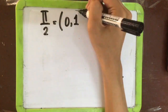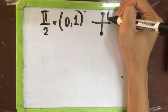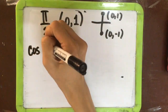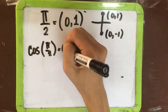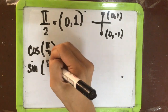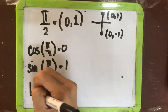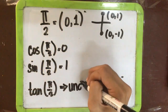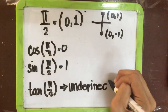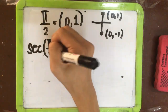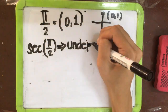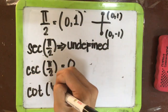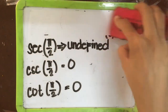The coordinates of π over 2 are (0, 1). So cosine equals 0, sine equals 1, tangent is undefined, secant is undefined, cosecant equals 1, and cotangent equals 0.